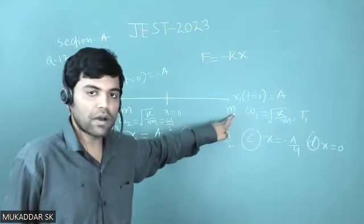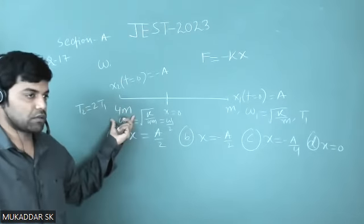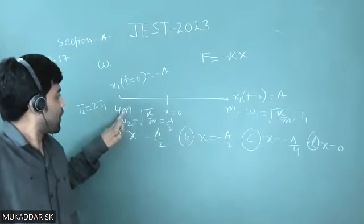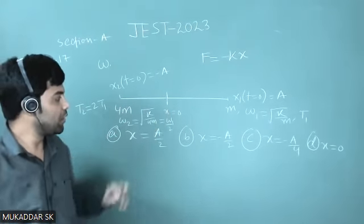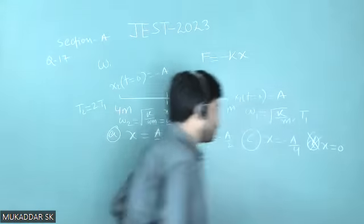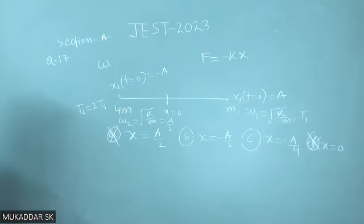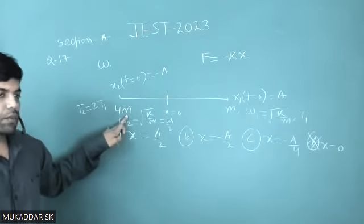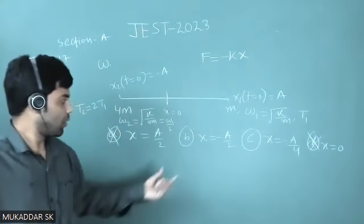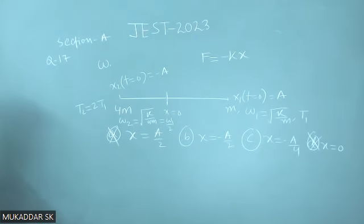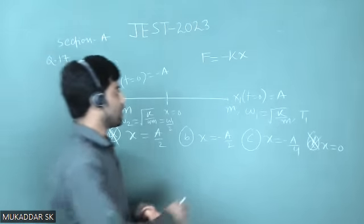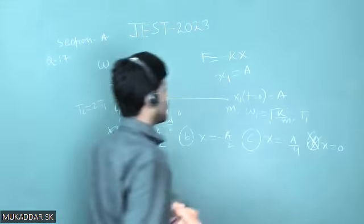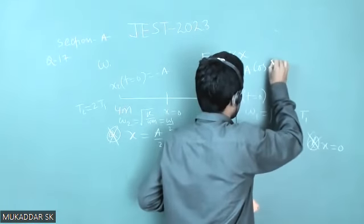As a result, mass m moves much faster than the 4m mass. Now, only two options remain. If a particle starts from the right extreme, then x₁ = A cos(ω₁t). On the other hand, if a particle starts from the negative extreme, then x₂ = -A cos(ω₂t).